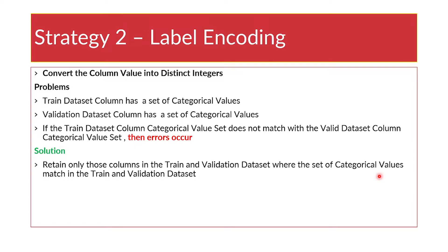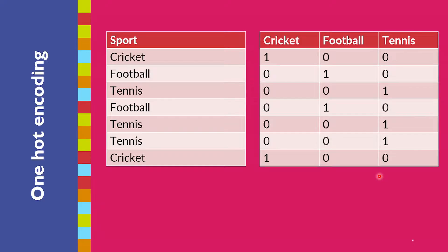We will explore this in detail with a concrete example. Let's jump into strategy three — one-hot encoding — which is well illustrated with an example. Suppose there is a column called 'sport' and these are the values that are there in that column.